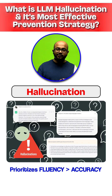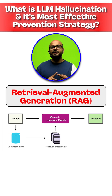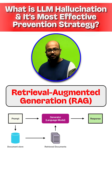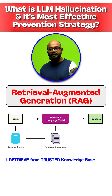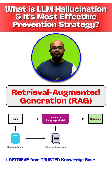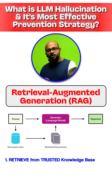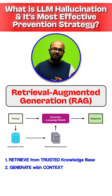The best way to prevent this is implementing RAG. Instead of relying on its internal memory, the LLM first retrieves relevant verified information from a trusted knowledge base and uses that context to generate an answer.